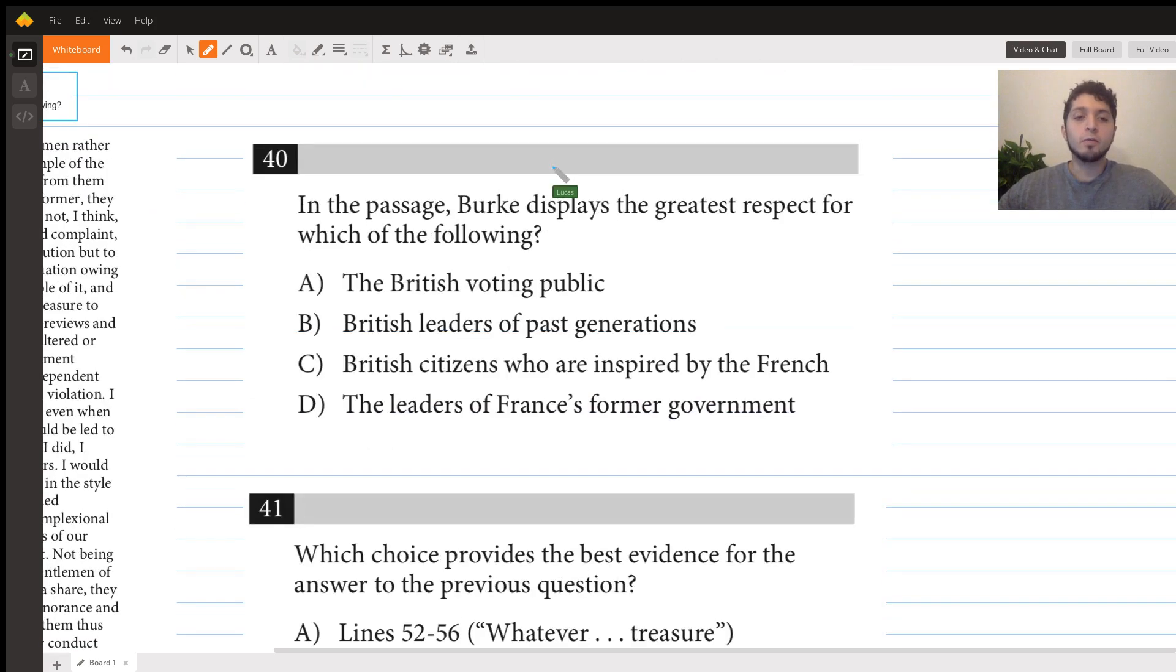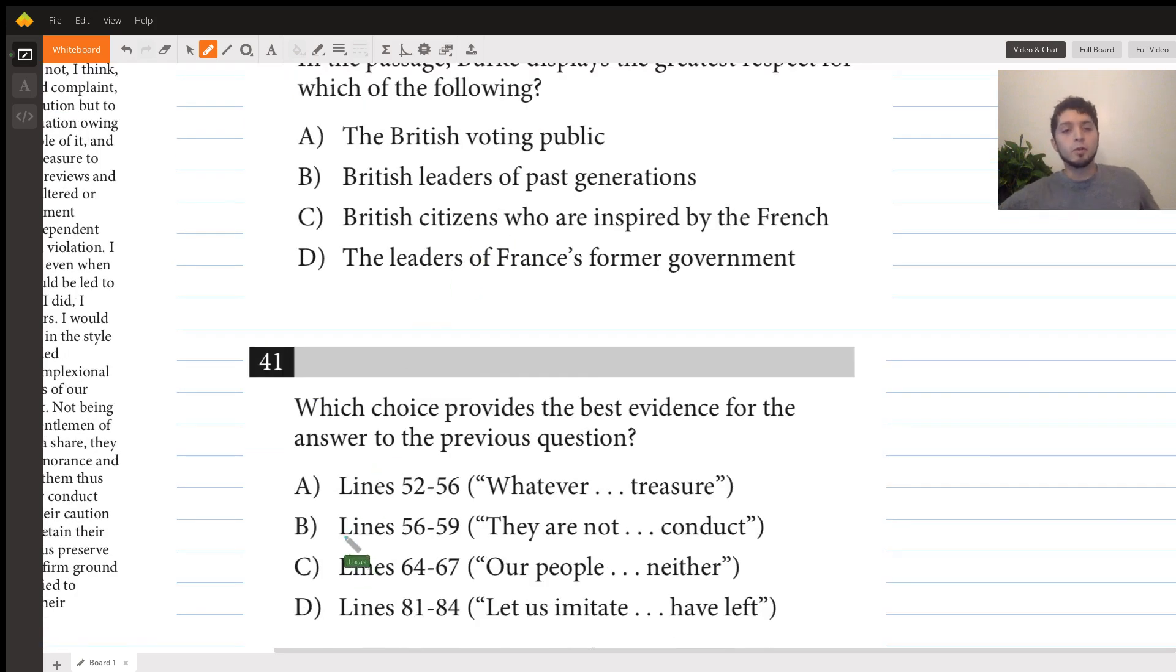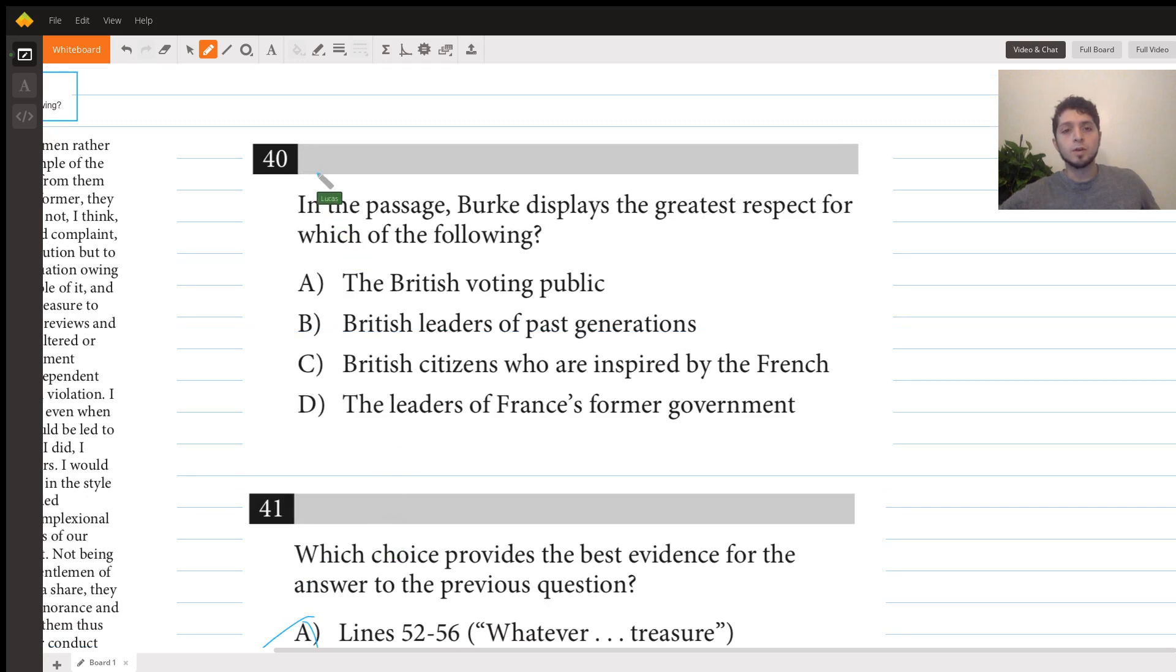Okay, so now we have questions 40 and 41. First thing we need to notice is that this is a paired question, which means we're going to start with the text from 41, choose one of these first, and then come back and answer 40.